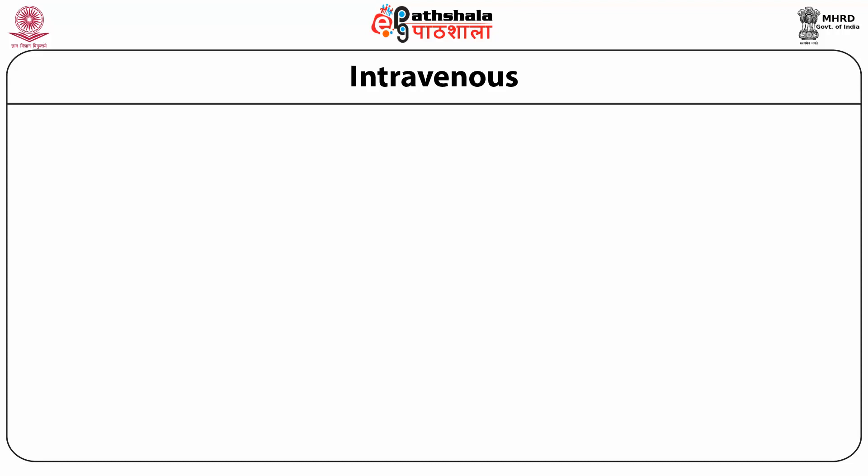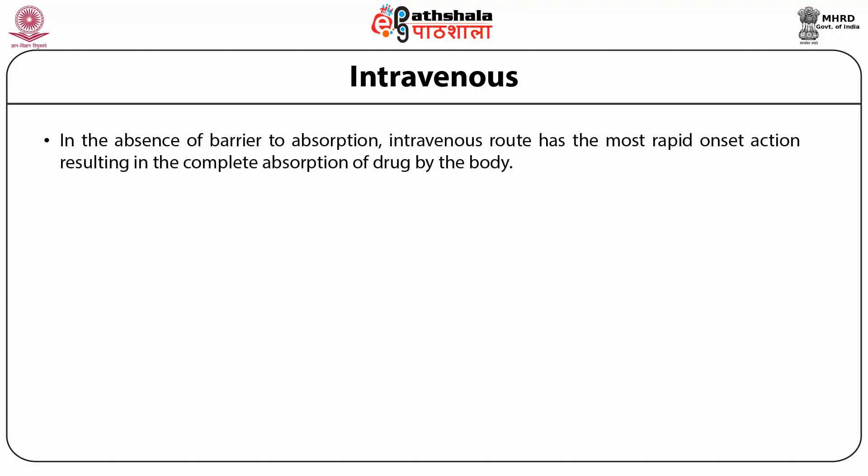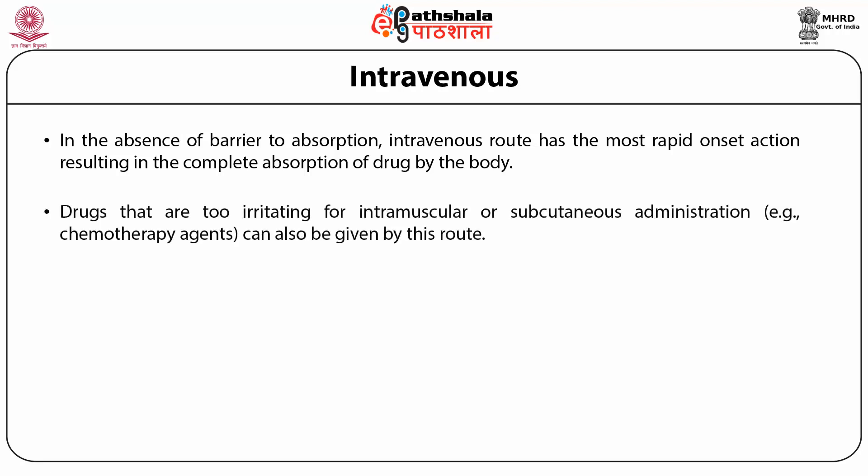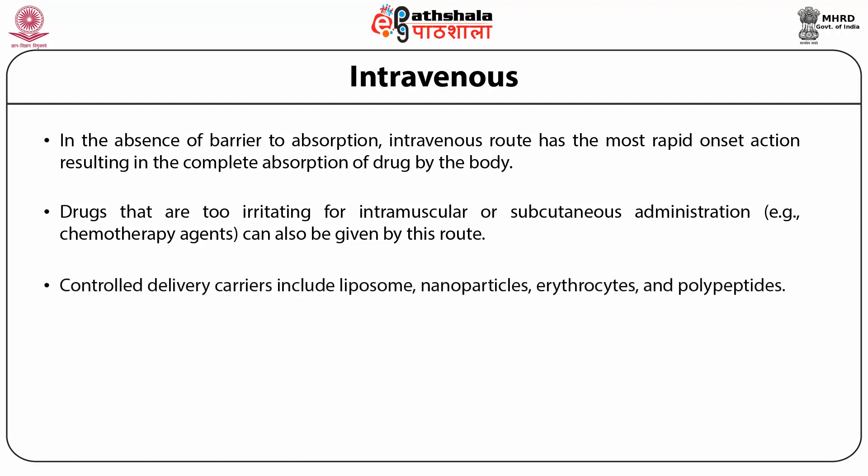The first route is intravenous (IV). In the absence of a barrier to absorption, the IV route provides the most rapid onset of action and results in complete absorption of the drug by the body. Drugs that are too irritating for intramuscular or subcutaneous administration — such as various chemotherapeutic agents — can also be given by this route. Controlled delivery carriers for the IV route include liposomes, nanoparticles, erythrocytes, and polypeptides.